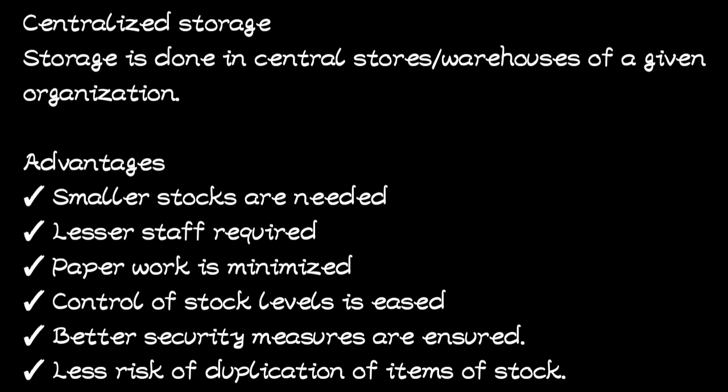The control of stock levels is easier when everything is in one place compared to when it is spread across different locations. Better security measures can also be ensured — if you know something is in one place, security is simpler. If materials are in different locations you have to put security everywhere, which is difficult. Finally, there is less risk of duplication of stock items.